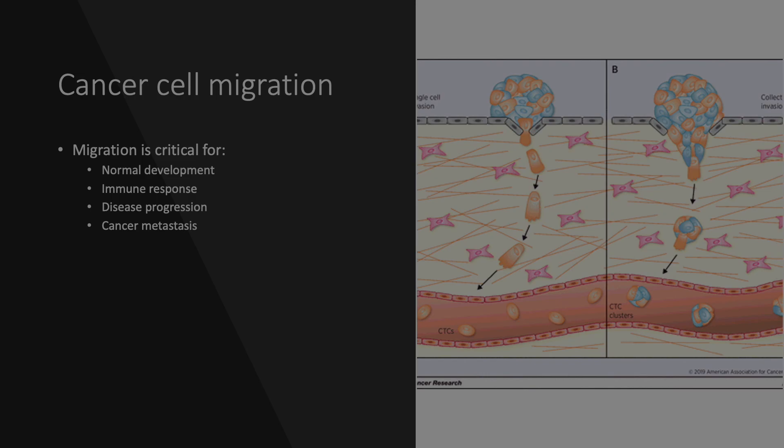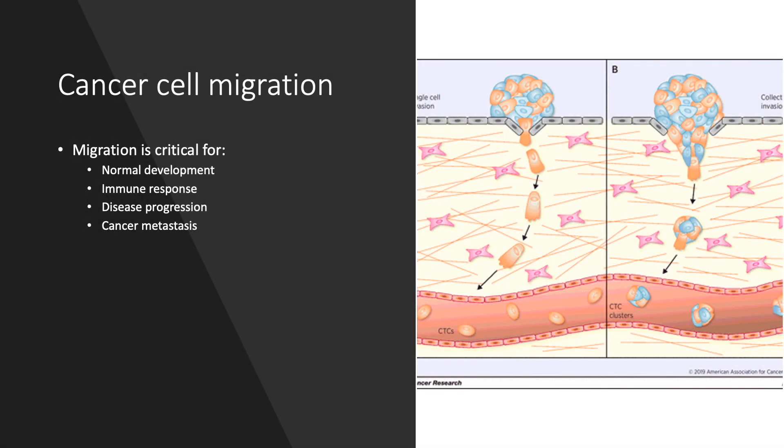Today we will be studying cell migration using a wound healing assay, also known as a scratch assay. Migration is a key property of living cells and it is critical for normal development, immune response, and disease progression, such as in cancer metastases.